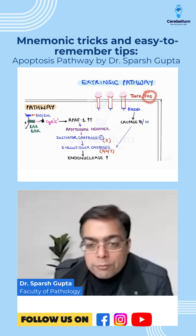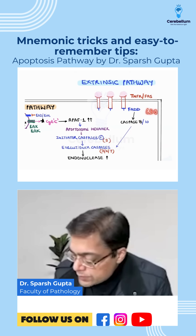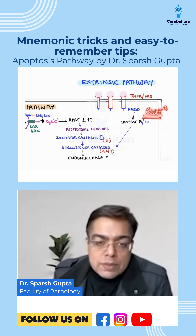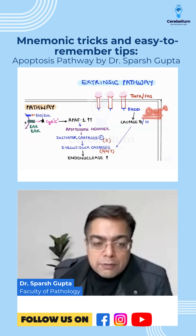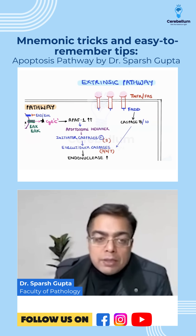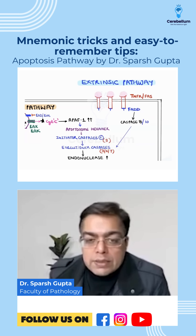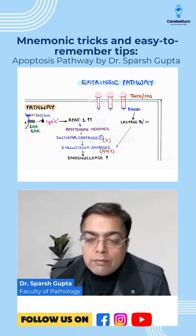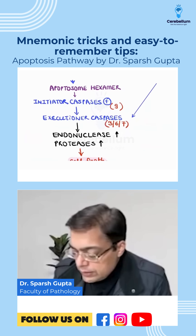Another important fact: the FAS molecule, also called FAS ligand, is given a second name — CD95. So when identifying which CD molecule is involved in the extrinsic pathway, it is CD95. To summarize: intrinsic pathway involves mitochondria, cytochrome C, Apaf-1, apoptosome, and caspase 9. The extrinsic pathway involves CD95, TNF, and caspase 8 and 10. Both converge on executioner caspases 3, 6, and 7.